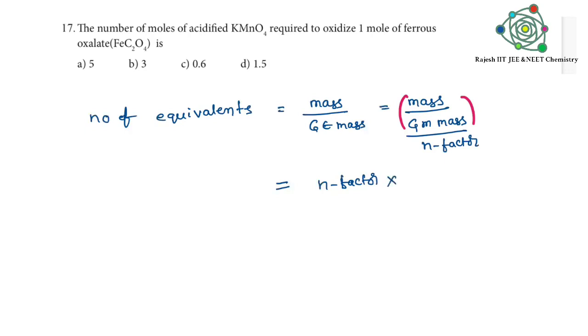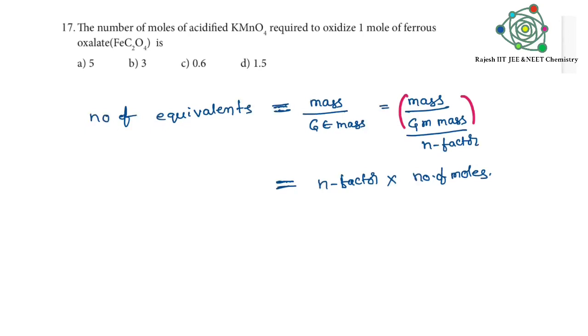So n-factor comes upside. Therefore n-factor into number of moles. So number of equivalents is equal to n-factor into number of moles. We can write like that. So now coming to the problem.